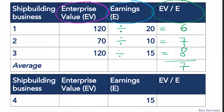In order to value shipbuilding business number four, we're going to use that average multiple and calculate its enterprise value. We have the multiple and we have the earnings, so we multiply the multiple times the earnings: 15 times seven is 105. We have more confidence in our valuation if businesses one, two, and three are more similar to business four, and less confidence if they are more different.